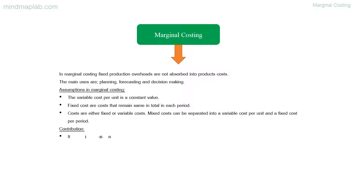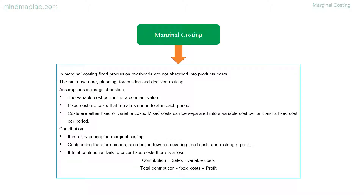Contribution is a key concept in marginal costing. Contribution means contribution towards covering fixed costs and making a profit. If total contribution fails to cover fixed costs, there is a loss. Contribution equals sales minus variable costs. Therefore, total contribution minus fixed costs equals profit.